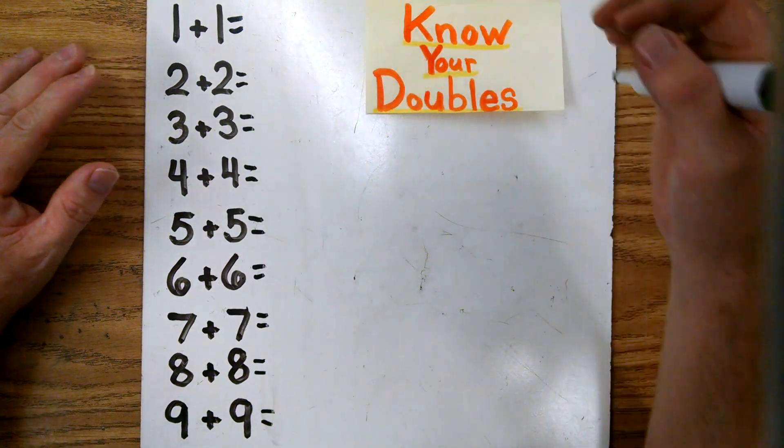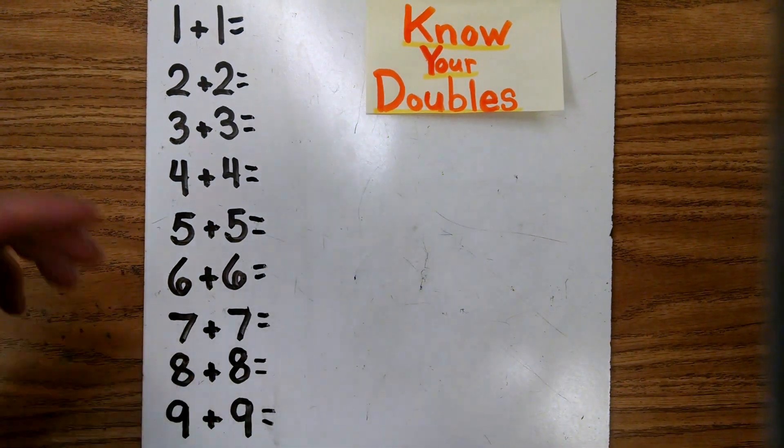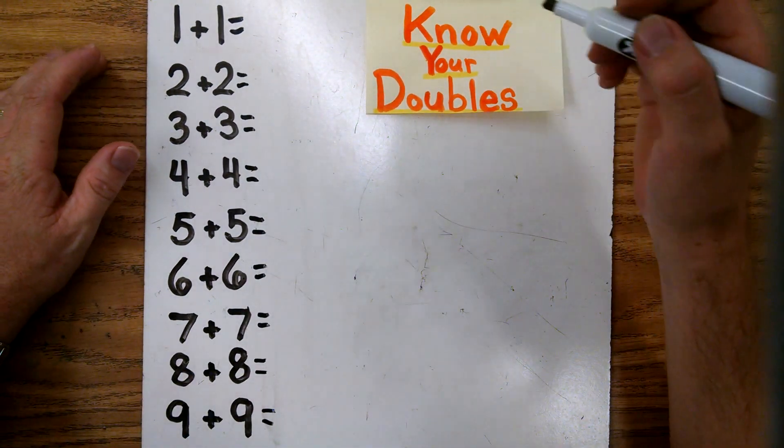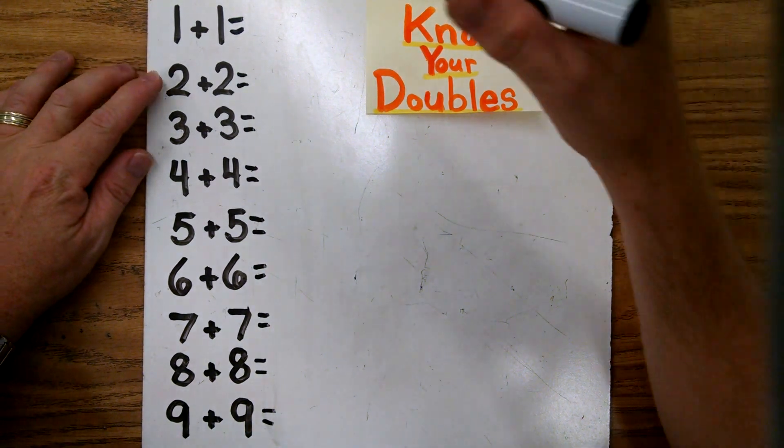We want to get rid of that as soon as we possibly can because it's too hard. It takes too long. It's too much work. And you don't want to be stuck hiding your fingers and embarrassed to count. So we're going to work on doubles today.